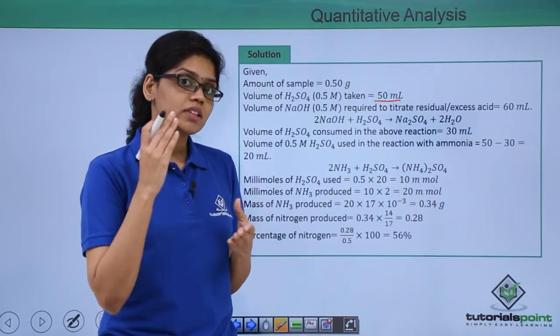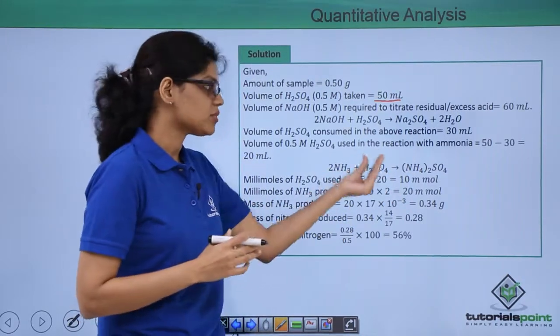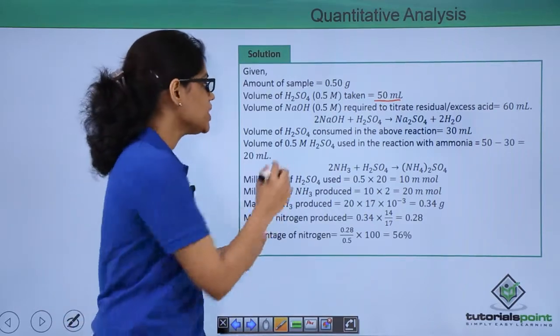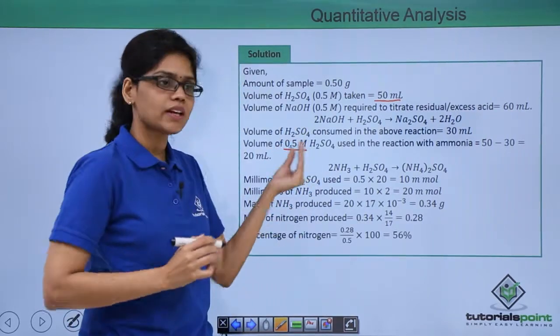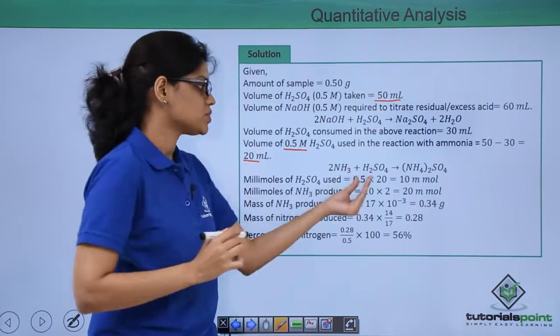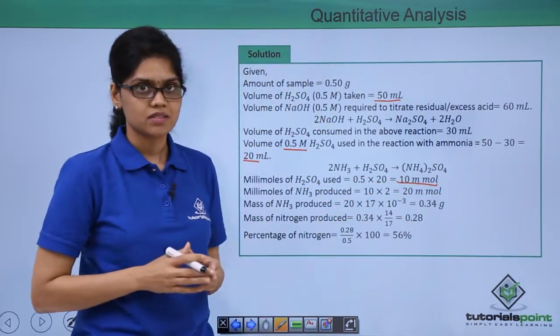The number of millimoles of sulfuric acid consumed in this reaction would be simply 0.5 molar, that is molarity into volume 20 ml, which is giving us 10 millimole of sulfuric acid.